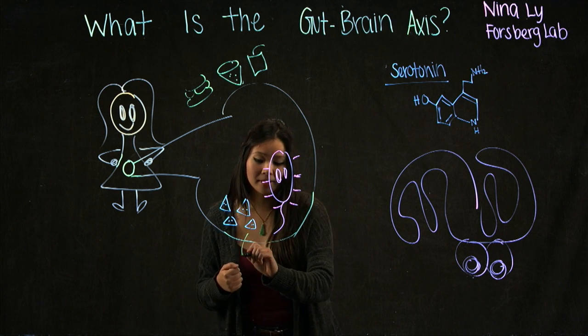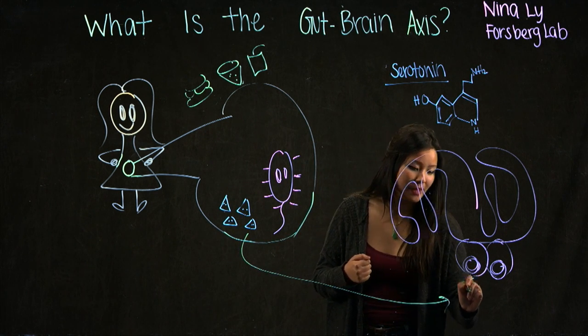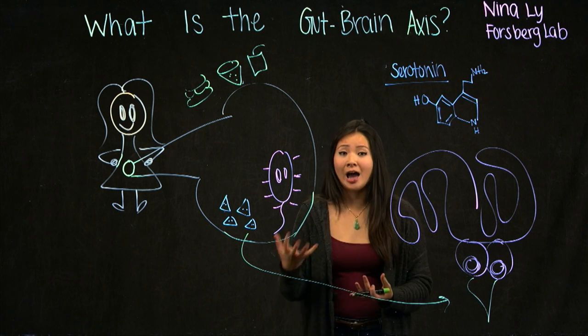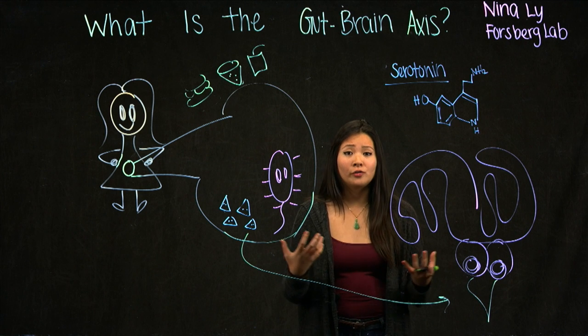And these metabolites travel through our blood system and our vagus nerve to interact with our brain, telling you, hey, you're feeling happy, or hey, you're feeling sad, or you're feeling full.